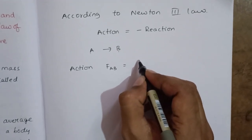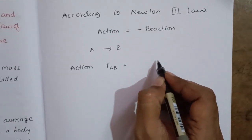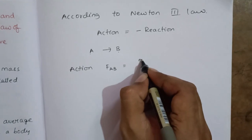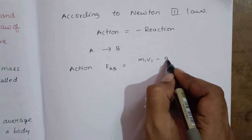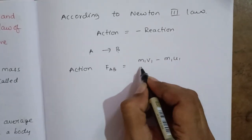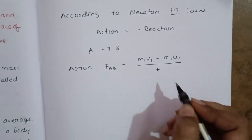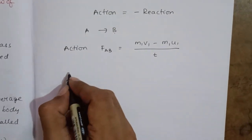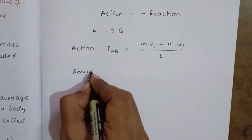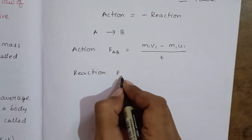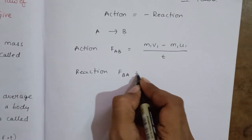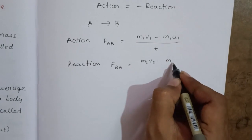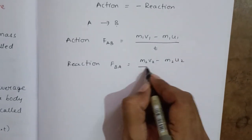The force applied by A on B equals the change in momentum of A, which is m1v1 minus m1u1 divided by the time of impact T. The force applied by B on A equals m2v2 minus m2u2 divided by T.